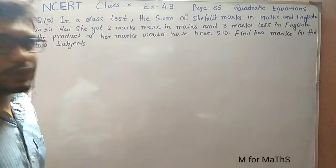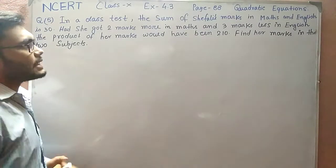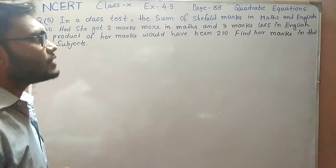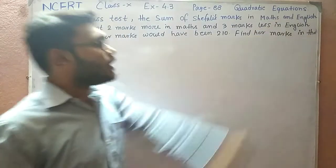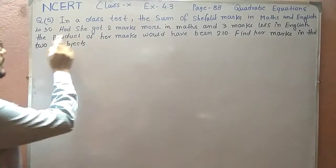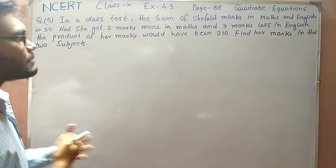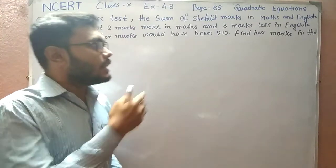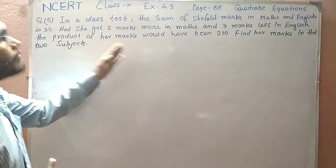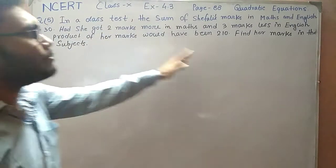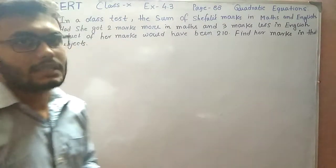First of all I am reading out the question I have written here. In a class test, the sum of Shefali's marks in Maths and English is 30. Had she got two marks more in Maths and three marks less in English, the product of her marks would have been 210. Find her marks in each of the two subjects.